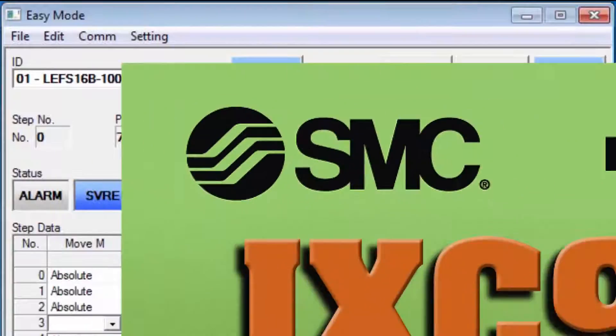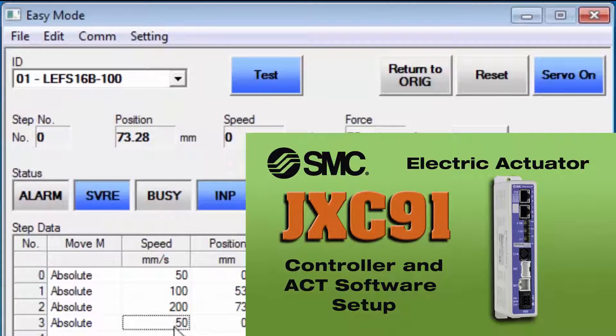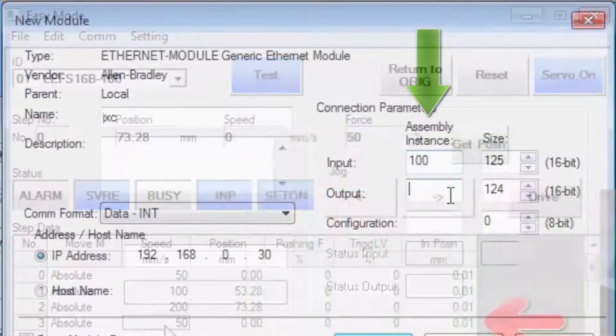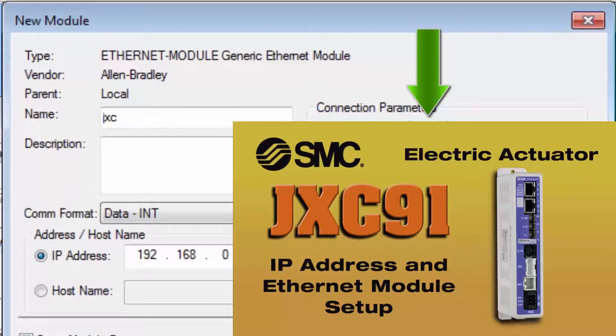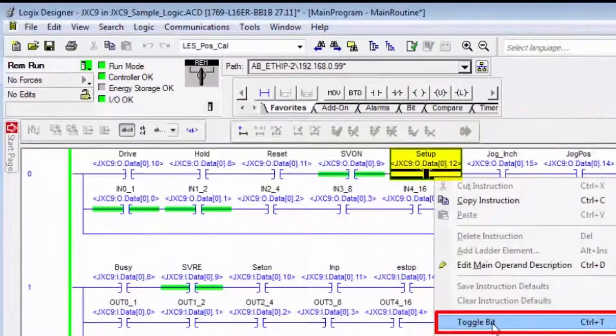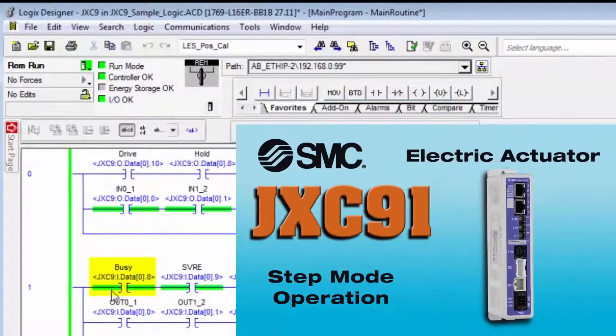Then watch the JXC91 controller and ACT software setup video. Review the PLC Ethernet module and IP address setup video. Finally, watch the step mode operation setup as a prerequisite for this video.